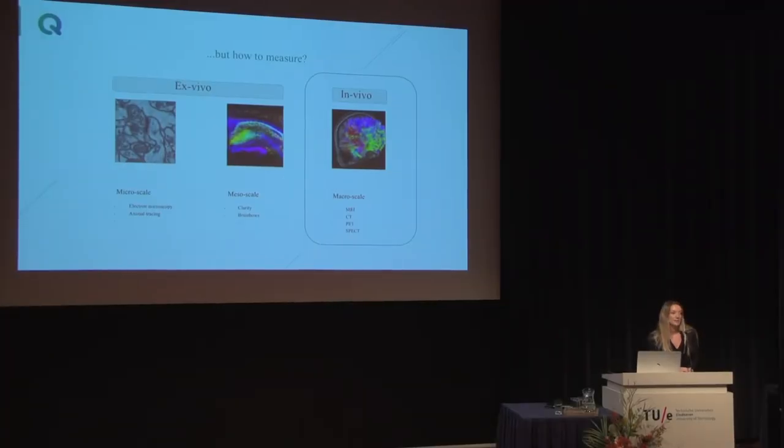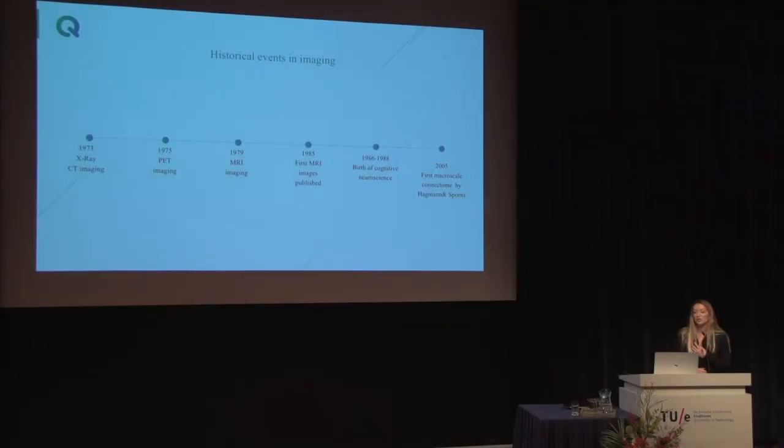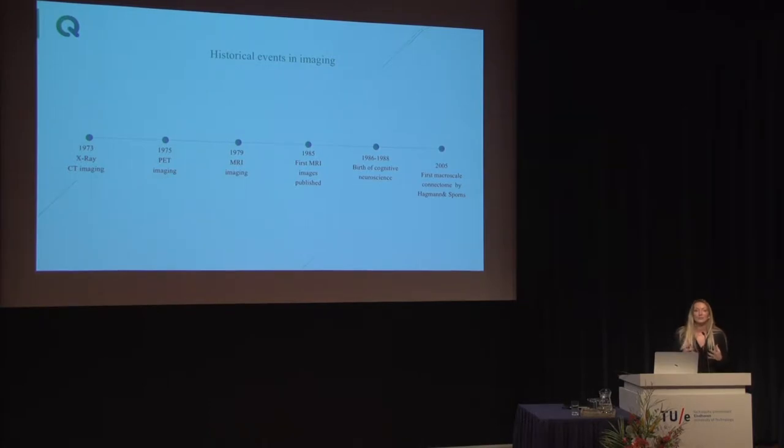I'm a fan of studying living brains, so I'll talk about in vivo connectivity imaging techniques — specifically MRI. When I was preparing this talk, I was surprised how recent this field is. X-ray and CT imaging were mostly widely used in the 70s, and MRI imaging started in the 80s. The first MRI experiments were conducted in '85, and after that the birth of cognitive science started. The term 'connectome' was coined very recently — about 10-12 years ago by Hagmann and Sporns. Even though it's a very recent field, it's really blossoming with rapid growth.